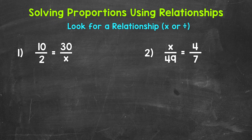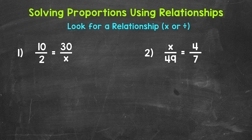Let's jump into number 1 where we have 10 to 2 equals 30 to x. So x is our unknown. We need to find what x equals. So let's look for a relationship that uses multiplication or division horizontally, so side to side, between the ratios. We can use this relationship to figure out the unknown, x. Now remember, whatever we do to the top term, we must do to the bottom term, or vice versa — whatever we do to the bottom term, we must do to the top term in order to keep this equivalent and in proportion. This is just like working with equivalent fractions.